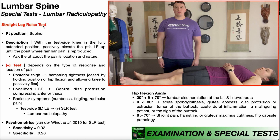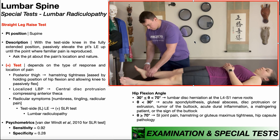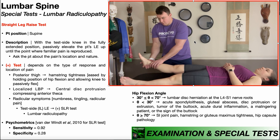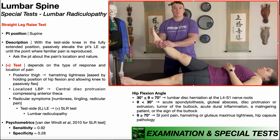To perform the straight leg raise test, the patient will be positioned in supine, as you see right here. With the test side knee — that is the right knee — in the fully extended position, we're going to passively elevate the right lower extremity up until the point where familiar pain and/or symptoms are reproduced. So we take the right lower extremity and we elevate it up with a straight knee.